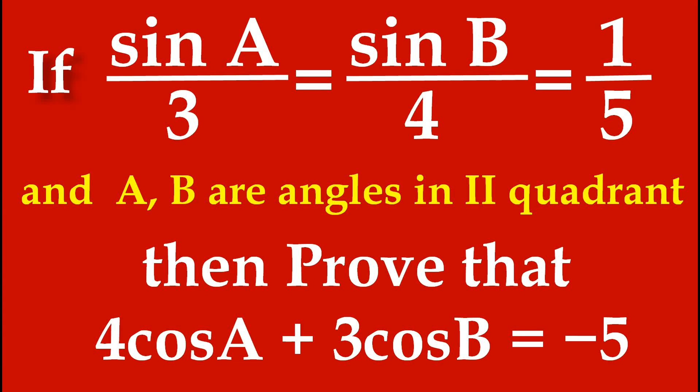Friends, now we have to solve one trigonometric problem. In this problem, one condition is given: sin A upon 3 is equal to sin B upon 4 is equal to 1 upon 5. And angles A and B are in the second quadrant.